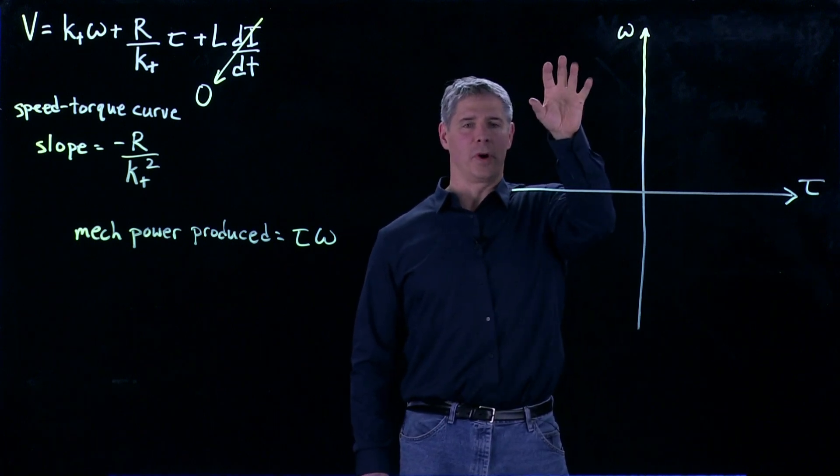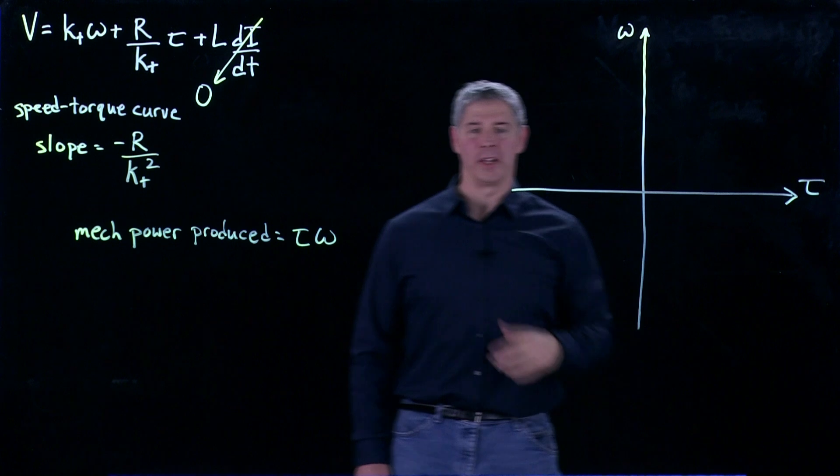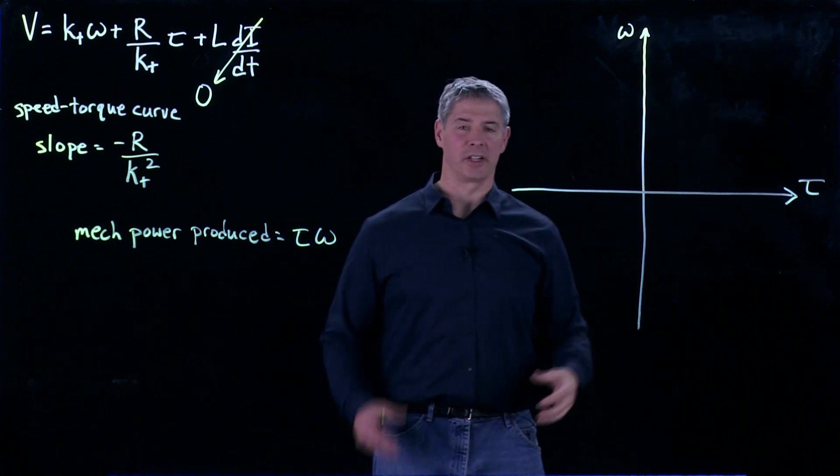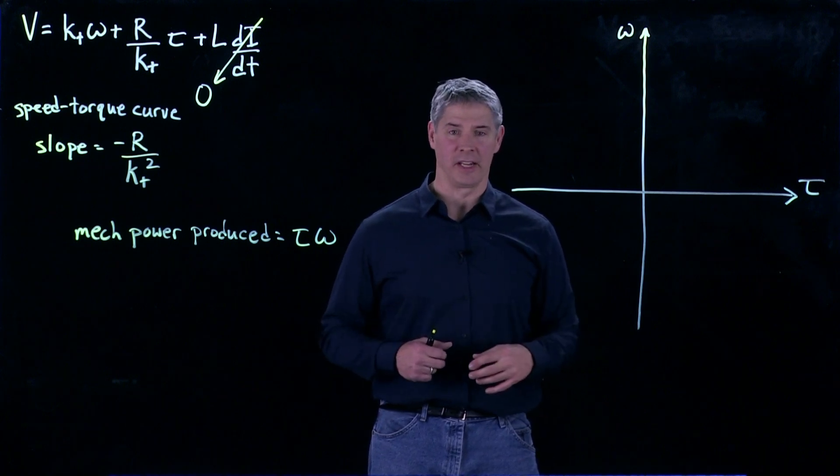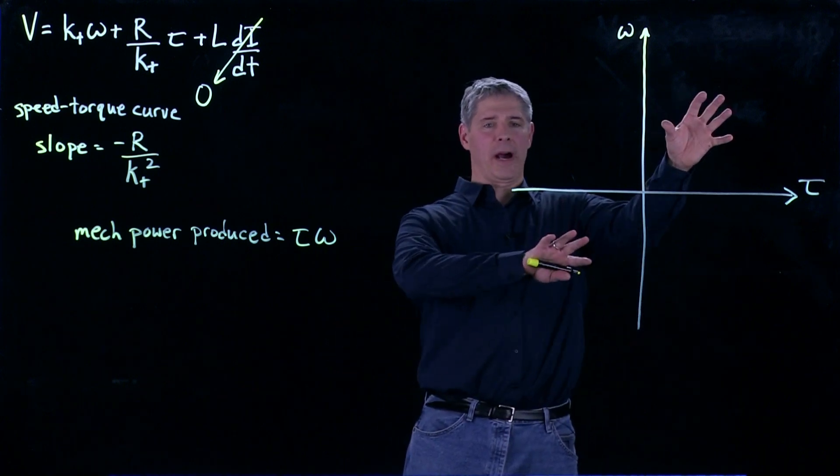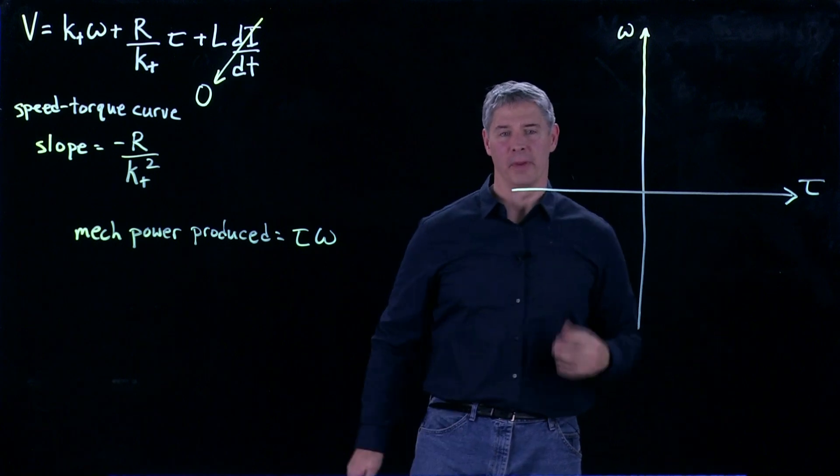But in these two quadrants, two and four, one is positive, one is negative, so the motor is actually consuming mechanical power, basically acting something like a damper. So producing power, consuming power for mechanical.